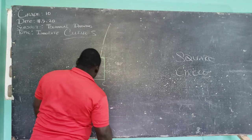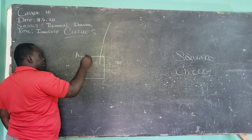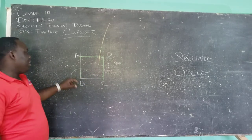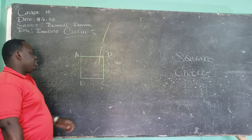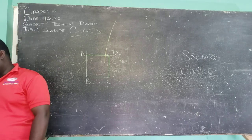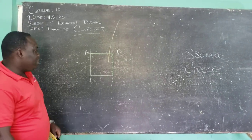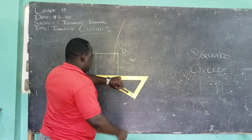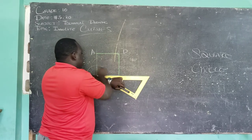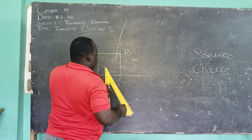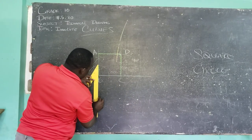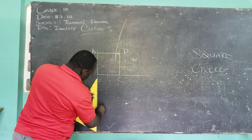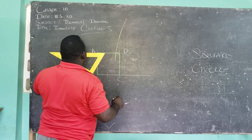Labeling is very important, so we're going to call this corner A, and then we have B and C. Imagine that we have a cord wrapped around our square, and we're going to be rolling that cord out. Simply put, we're going to be extending our BC line, and we're also going to be extending our AB line.